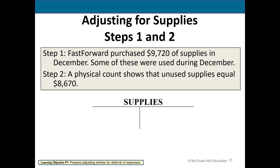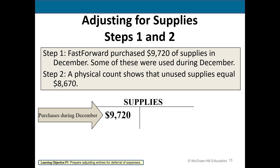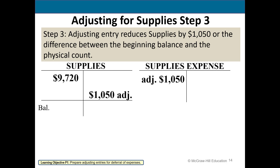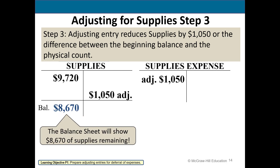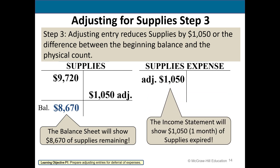Next we look at supplies. They initially purchased $9,720 of supplies, debited to the asset account. They then took a physical inventory at the end of the month showing only $8,670 remaining. The difference of $1,050 has been used up, so we reduce the supplies account to the correct balance of $8,670 and increase the supplies expense account by the same amount, which will be reported on the income statement.